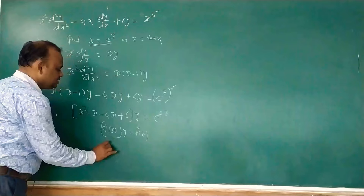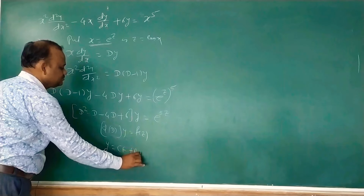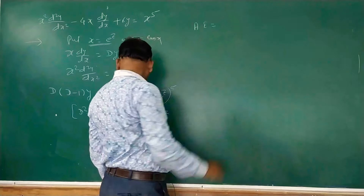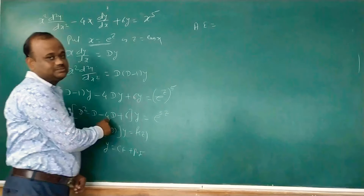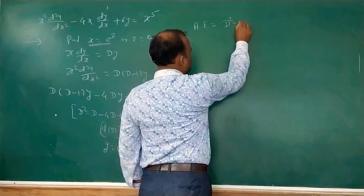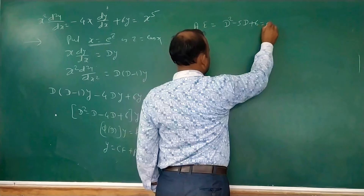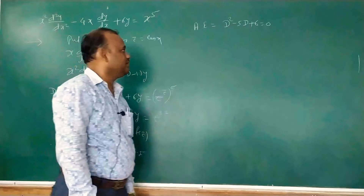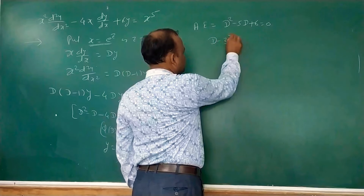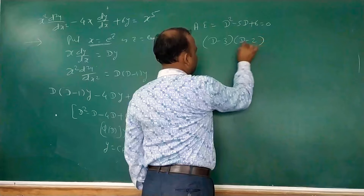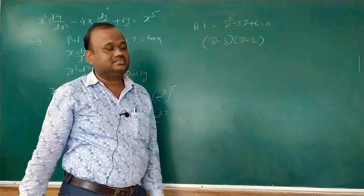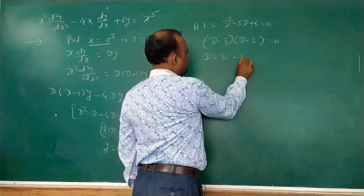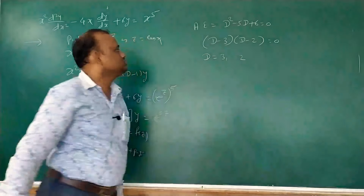For the complementary function, the auxiliary equation is D² − 5D + 6 = 0. Factoring: (D−3)(D−2) = 0, since (−3)(−2) = 6 and (−3)+(−2) = −5. So the roots are D = 3 and D = 2.